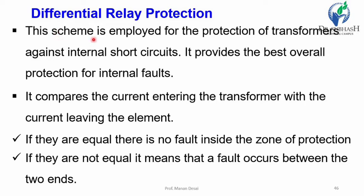The differential relay protection scheme is a unit type of protection. This scheme is employed for the protection of transformers against internal short circuits. It provides the best overall protection for internal faults — not for external faults, which are covered by the Buchholz relay. The differential relay is mainly for internal faults like winding interturn faults and internal short circuits.